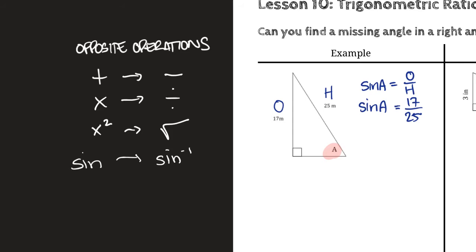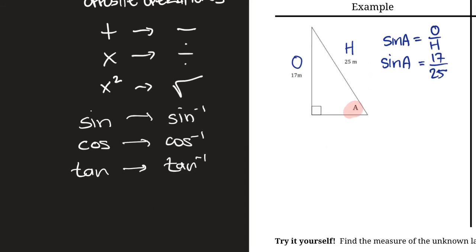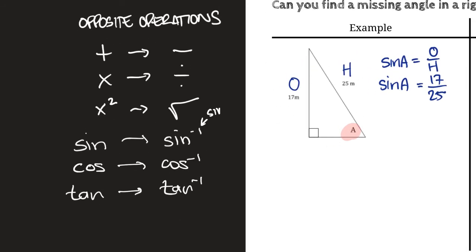And this means inverse sine, which just means opposite of sine, undo sine. There's the same thing for cos. The opposite of cos is cos negative one. And the opposite for tan is tan negative one. So whenever we want to get rid of sine, we need to do sine negative one or sine inverse as it's called. Let me just actually write that down. This is called sine inverse.